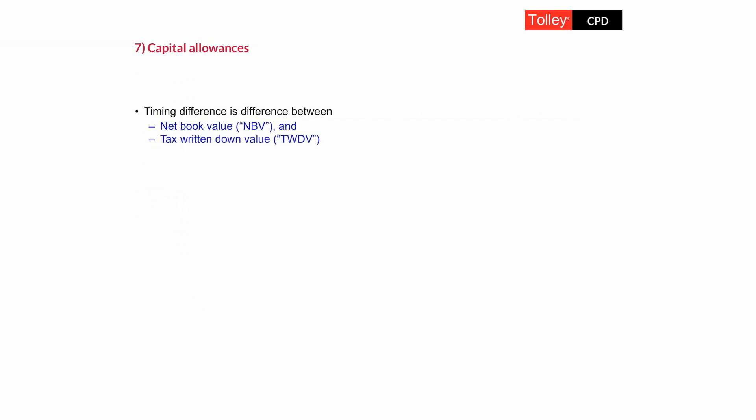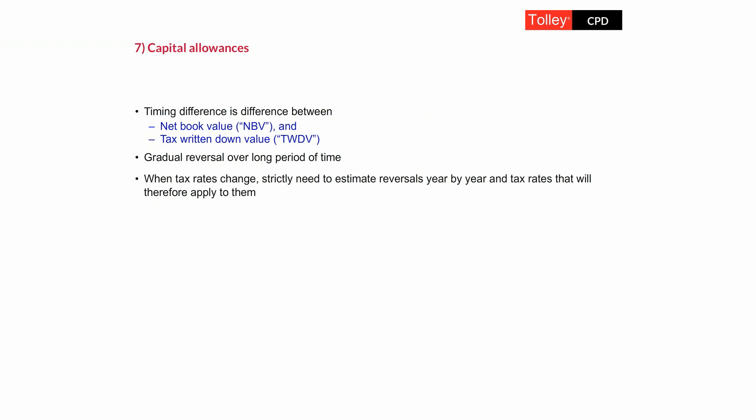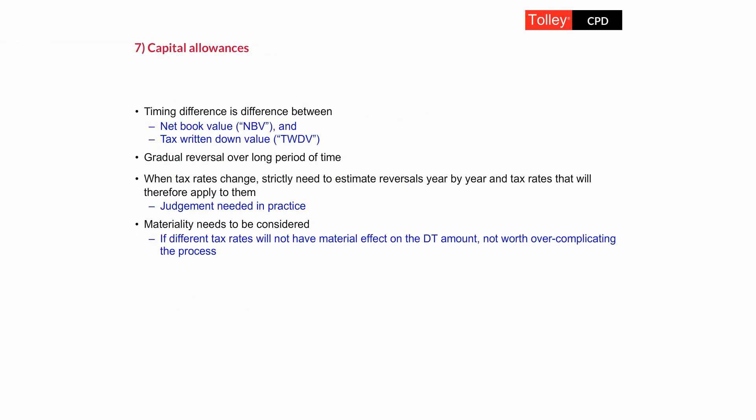Capital allowances are more complicated, because they reverse out over a much longer period than pension costs. The timing difference is the difference between the book value for accounting purposes and the tax written down value — the original qualifying cost minus capital allowances to date. When tax rates change, we need to forecast the reversals of those timing differences, forecasting future depreciation and future capital allowances or writing down allowances, and apply the appropriate enacted tax rates to those reversals for the periods to which they relate.